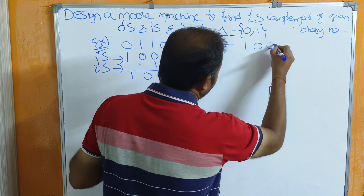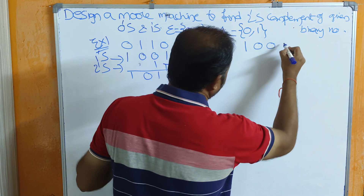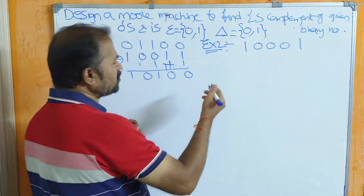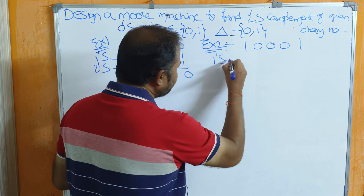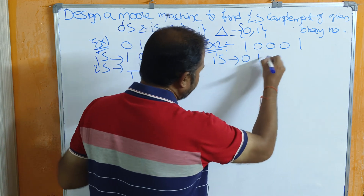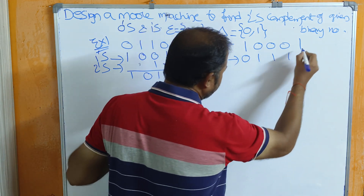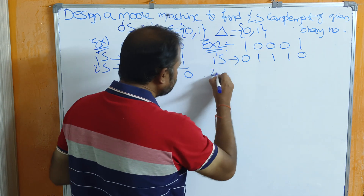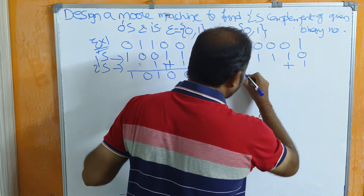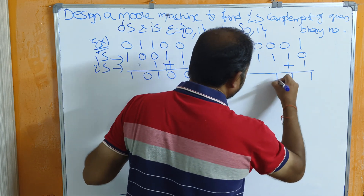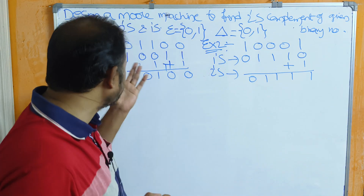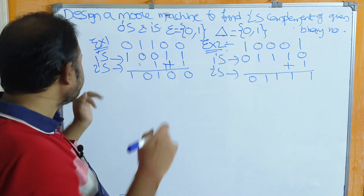Likewise, let us calculate the 2's complement for another number. Let the number be 1 0 0 1. 2's complement equals 1's complement plus 1. So 1→0, 0→1, 0→1, 1→0. Then add 1 to get the 2's complement.